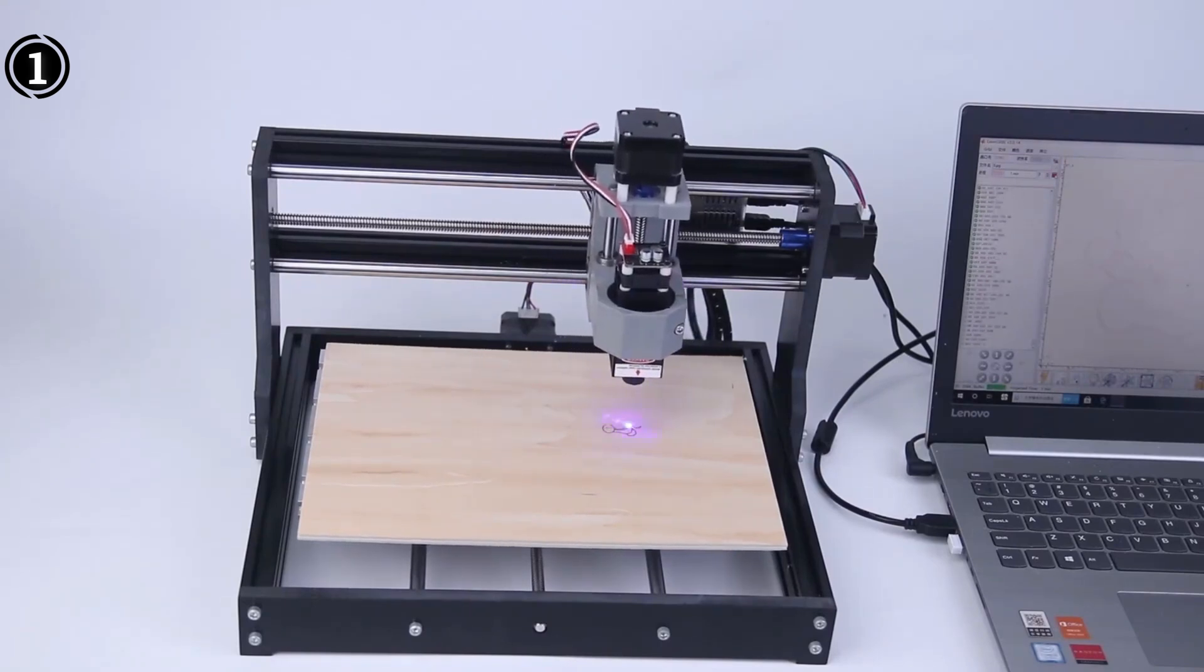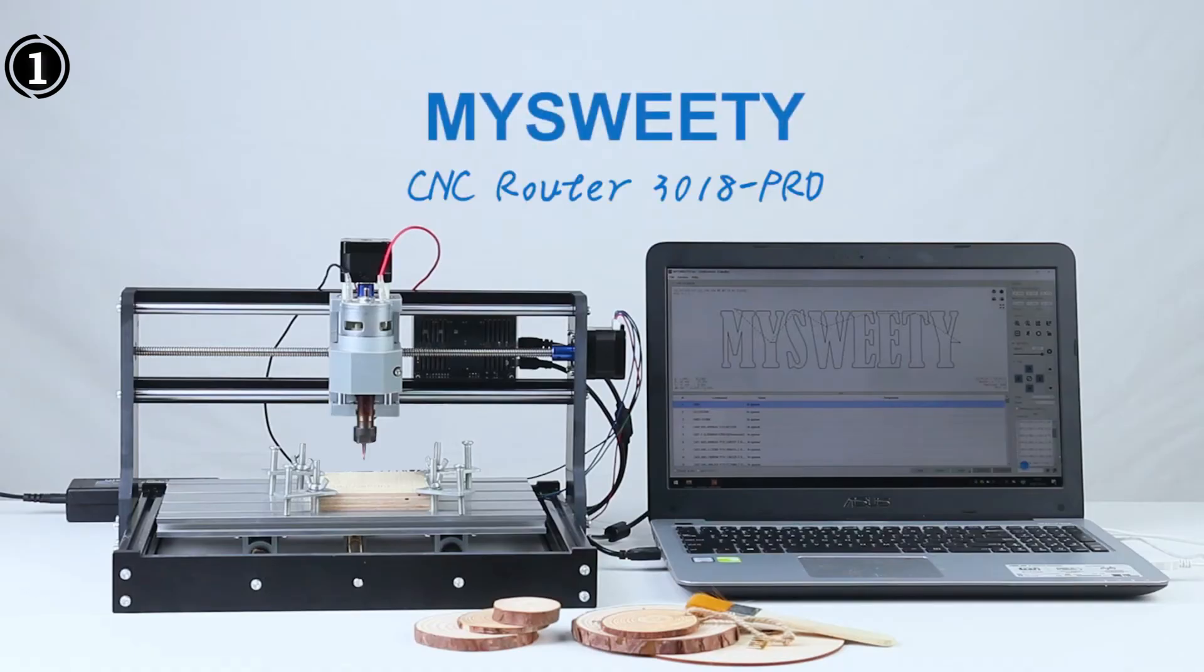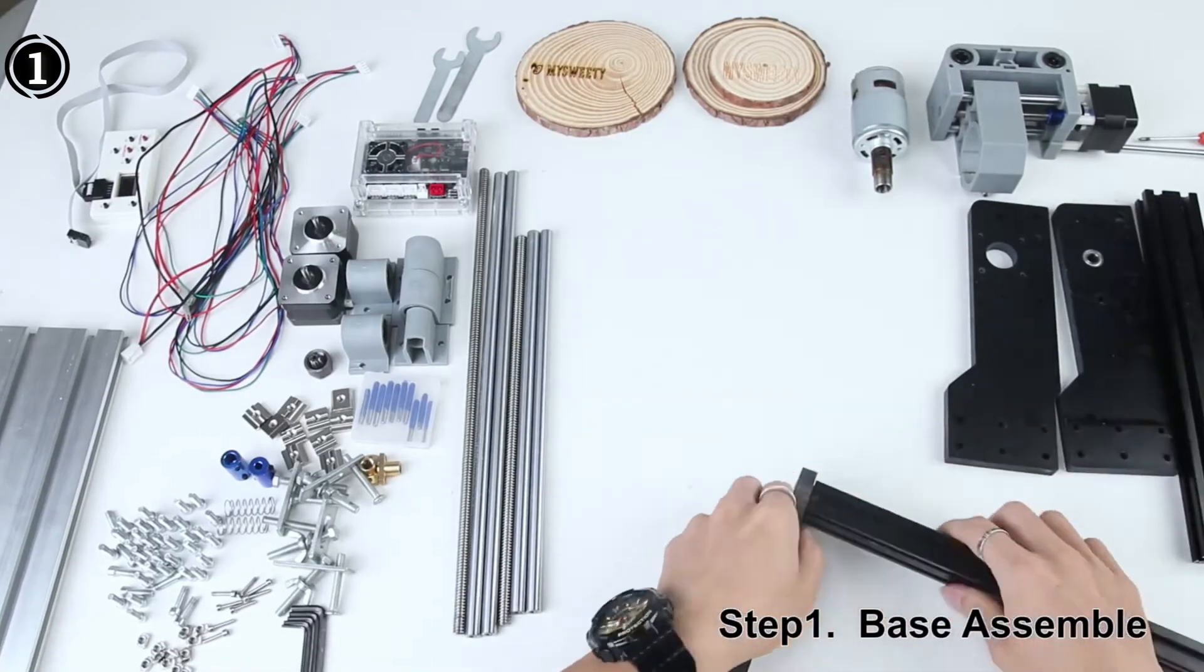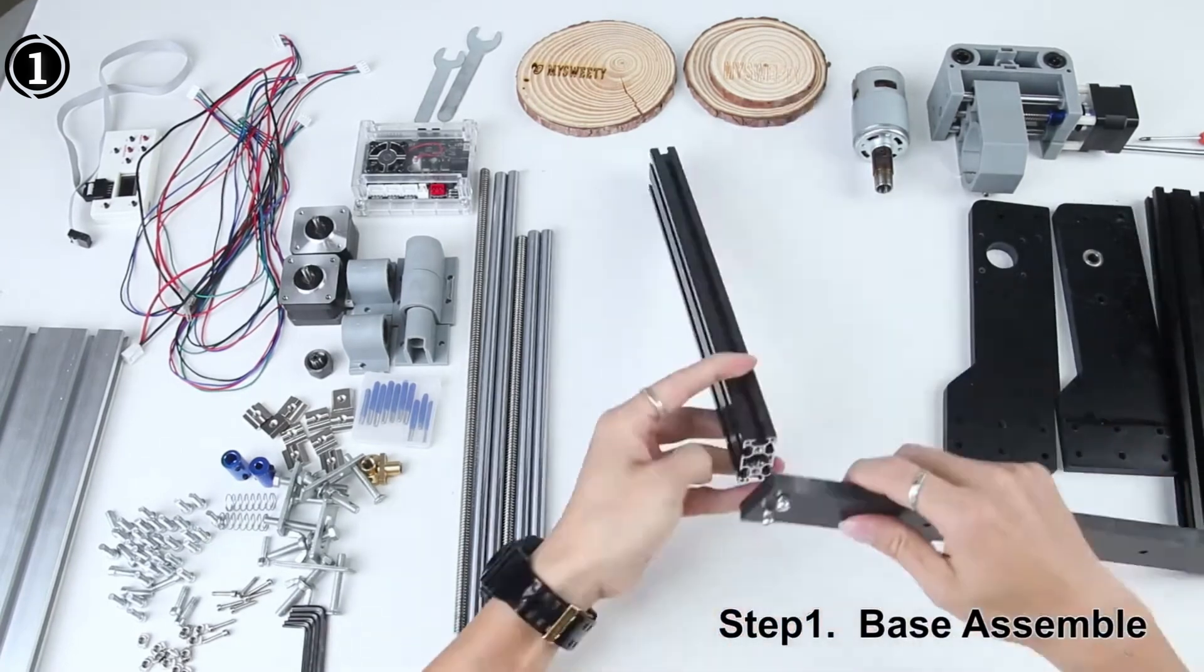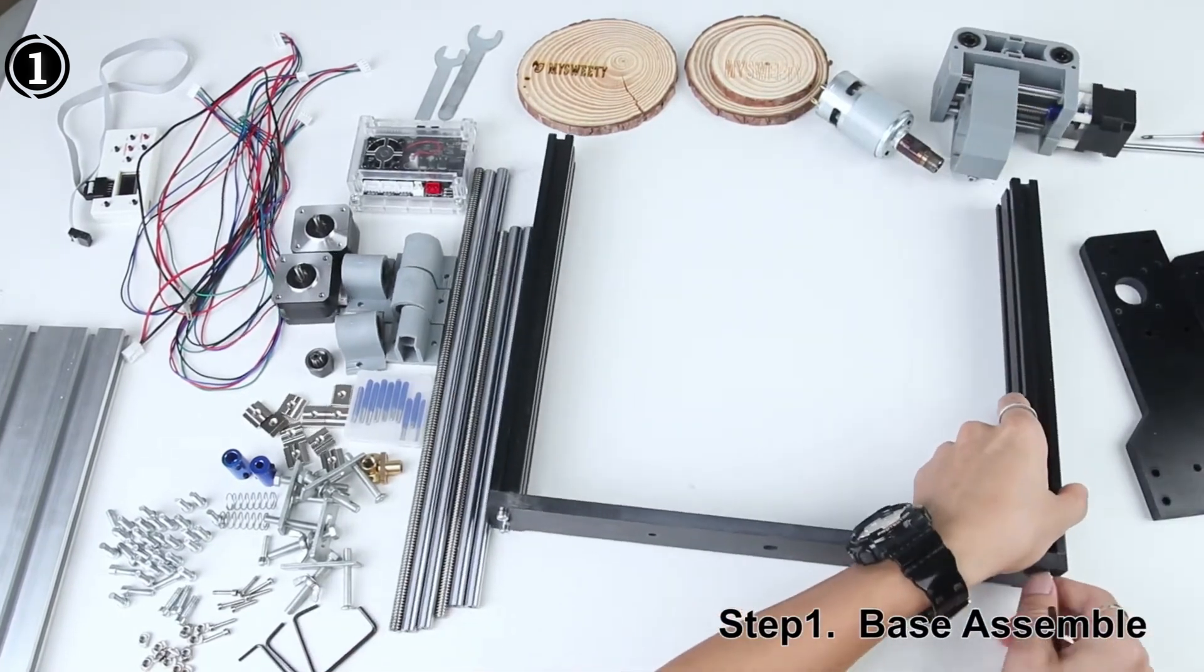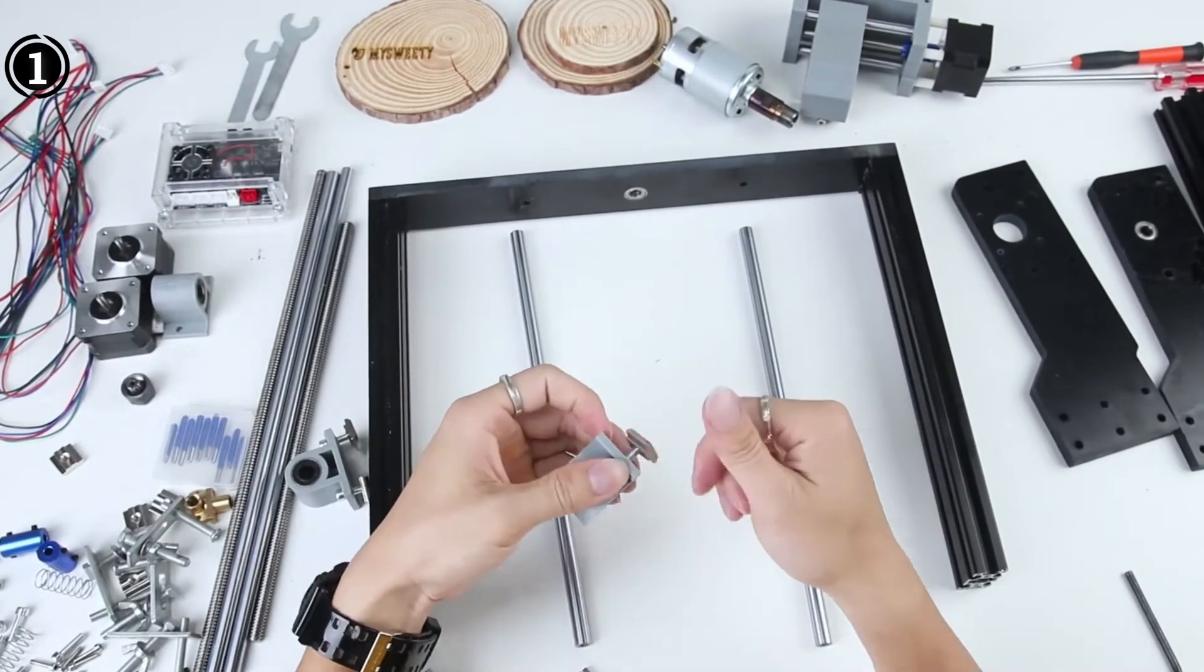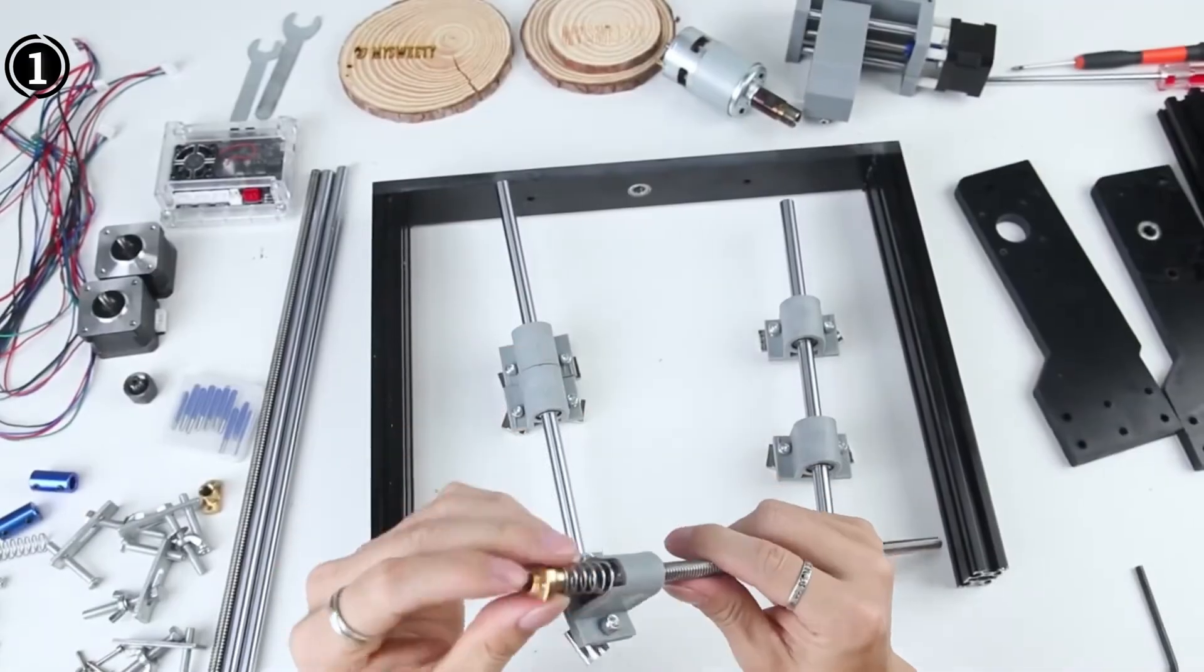The versatility of this CNC milling machine is truly remarkable, as it excels in performing delicate cuts and can effectively handle a wide range of materials, including plastics, acrylics, woods, PVC, PCBs, and various other projects.